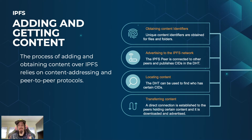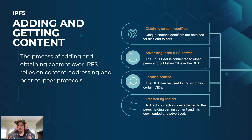So the first step when adding content to the IPFS network is to obtain the content identifiers for that content. This can happen online or offline at any moment. Once we have those CIDs, the next step is to announce them to the IPFS network so that they can be retrieved by other IPFS peers. But what is a peer, and what does it do?